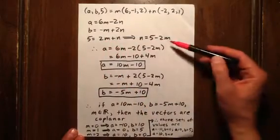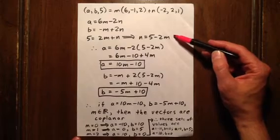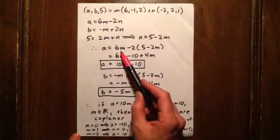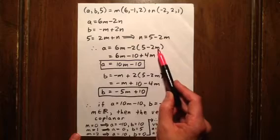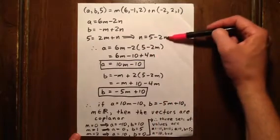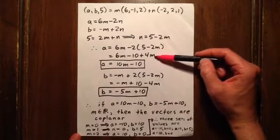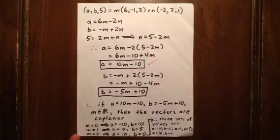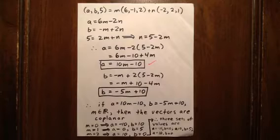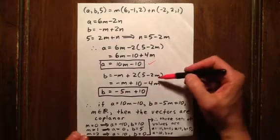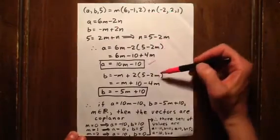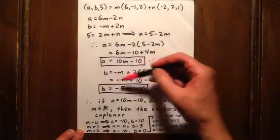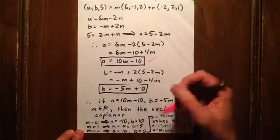From the last equation, n equals 5 minus 2m. Substituting into the first equation: A is 6m minus 2 times (5 minus 2m), which gives A equals 6m minus 10 plus 4m, so A equals 10m minus 10. Then for B: negative m plus 2 times (5 minus 2m) gives negative m plus 10 minus 4m, so B equals negative 5m plus 10.